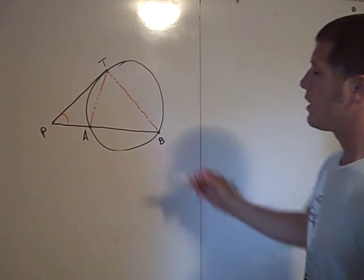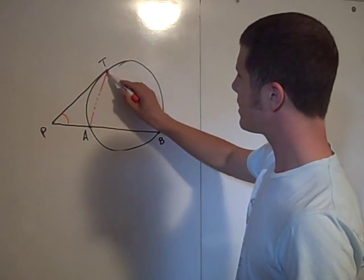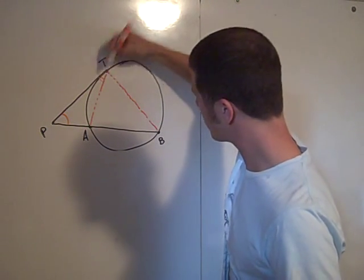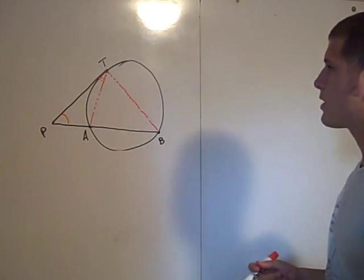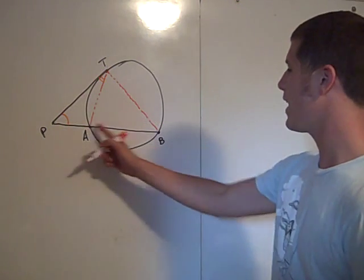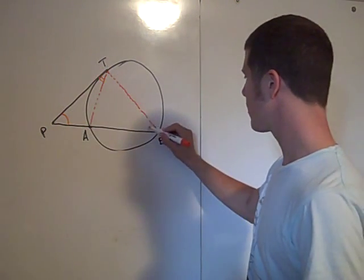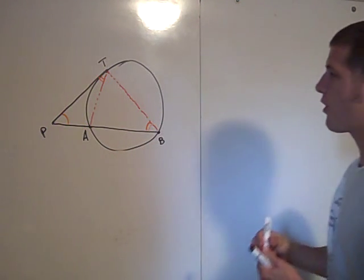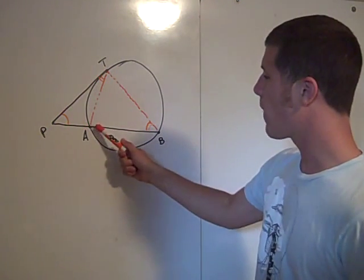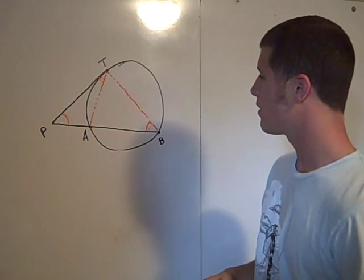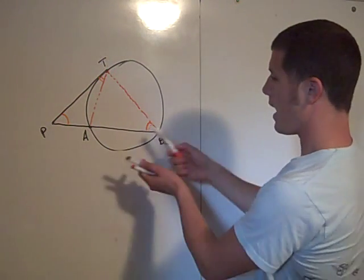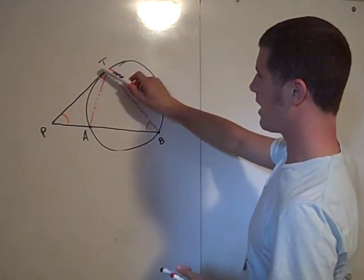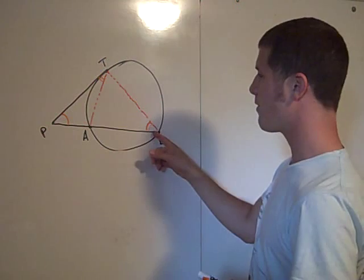Here angle ATP is congruent to angle ABT. Why? Because they are both half the measure of the arc AT. Angle ABT is an inscribed angle that grabs arc AT, so it's half of that.